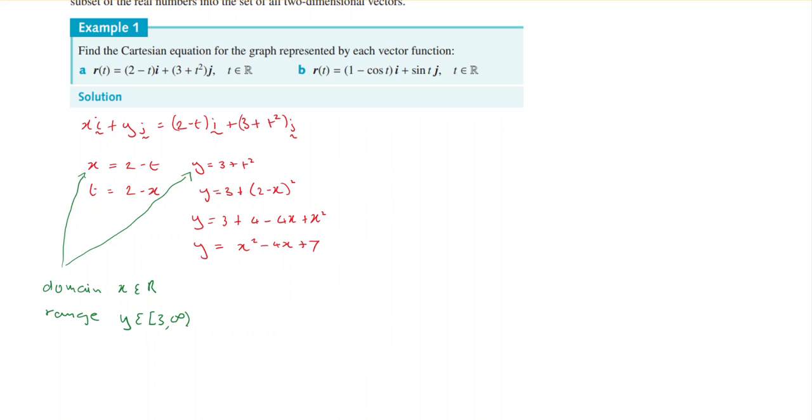And if you graph this Cartesian equation, x squared minus 4x plus 7, you'll find that the turning point is going to have a y value of 3. But you don't need to actually graph the Cartesian equation. You can get the domain and range from the initial parametric equations that you've set up. That was A.